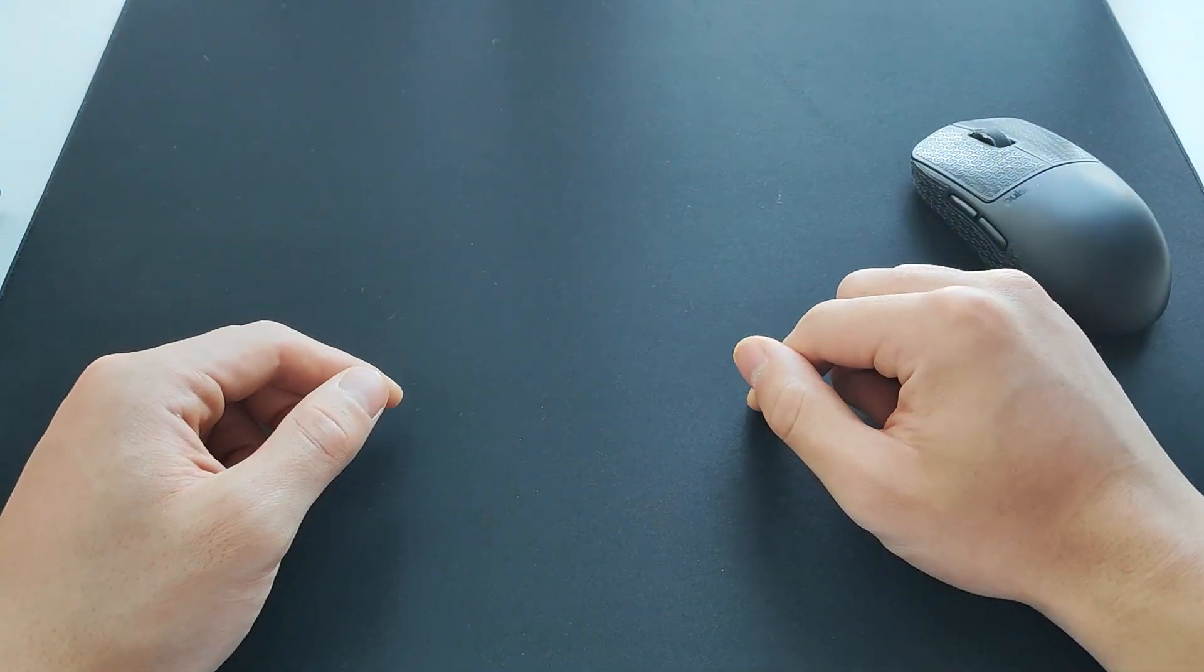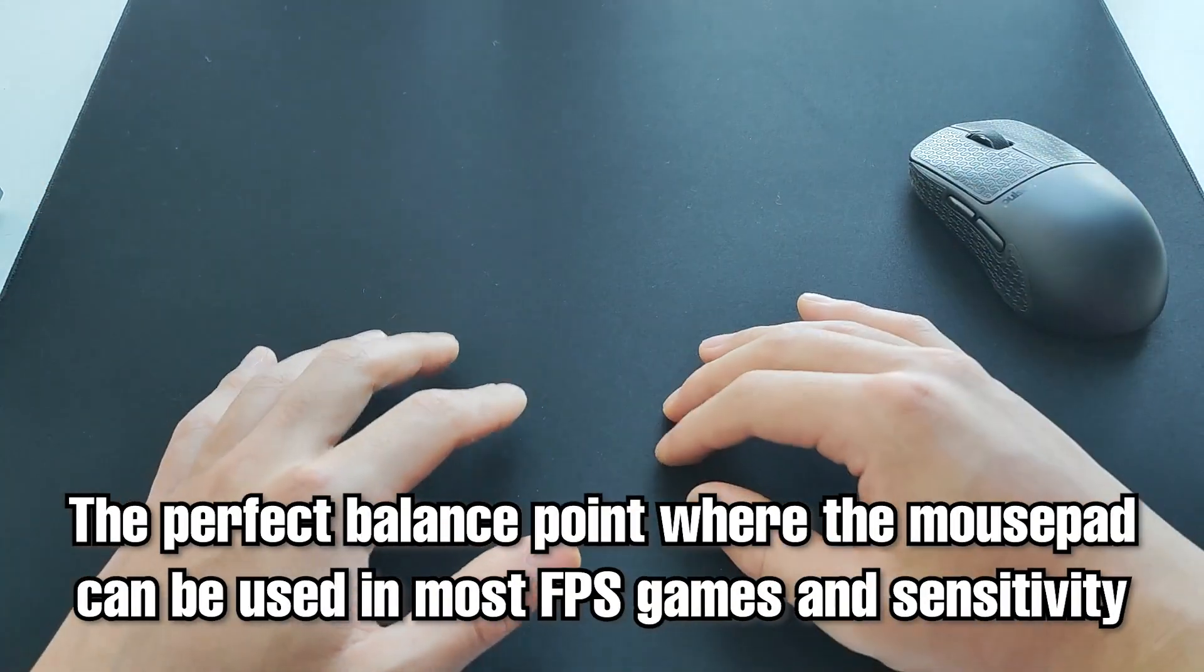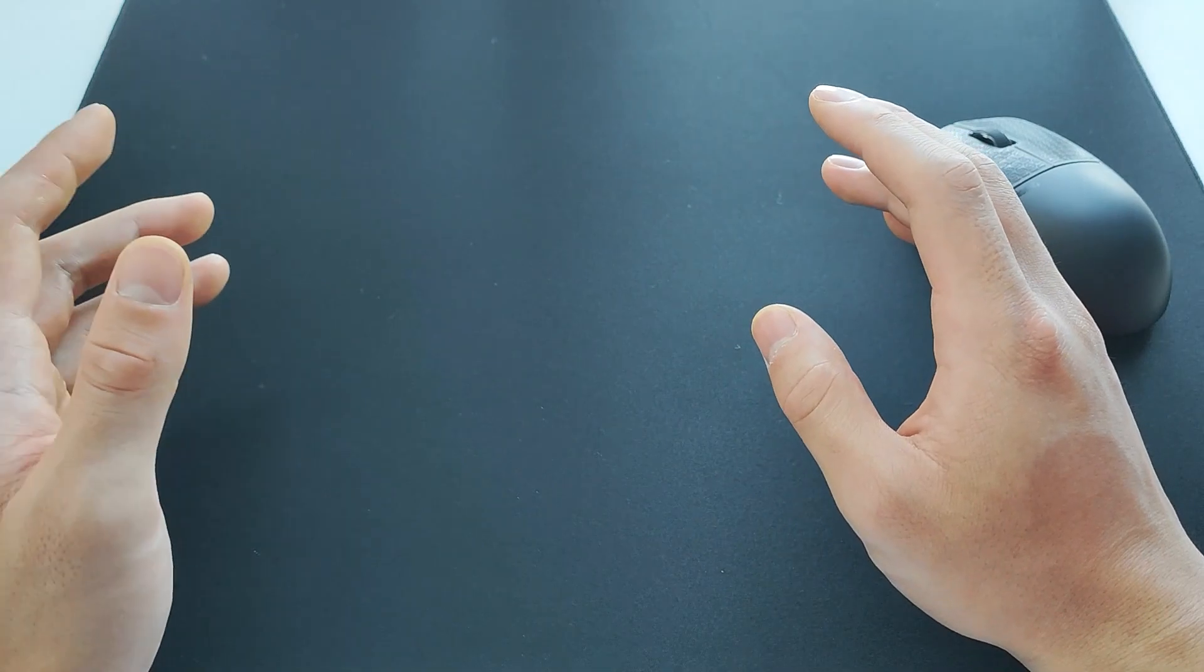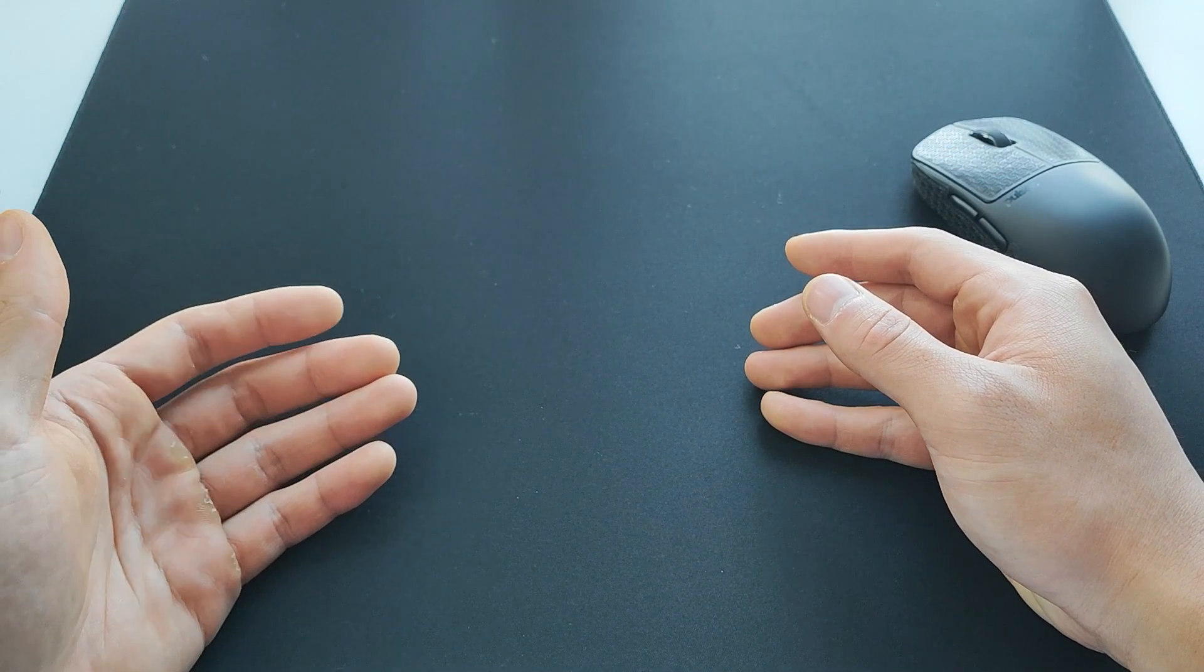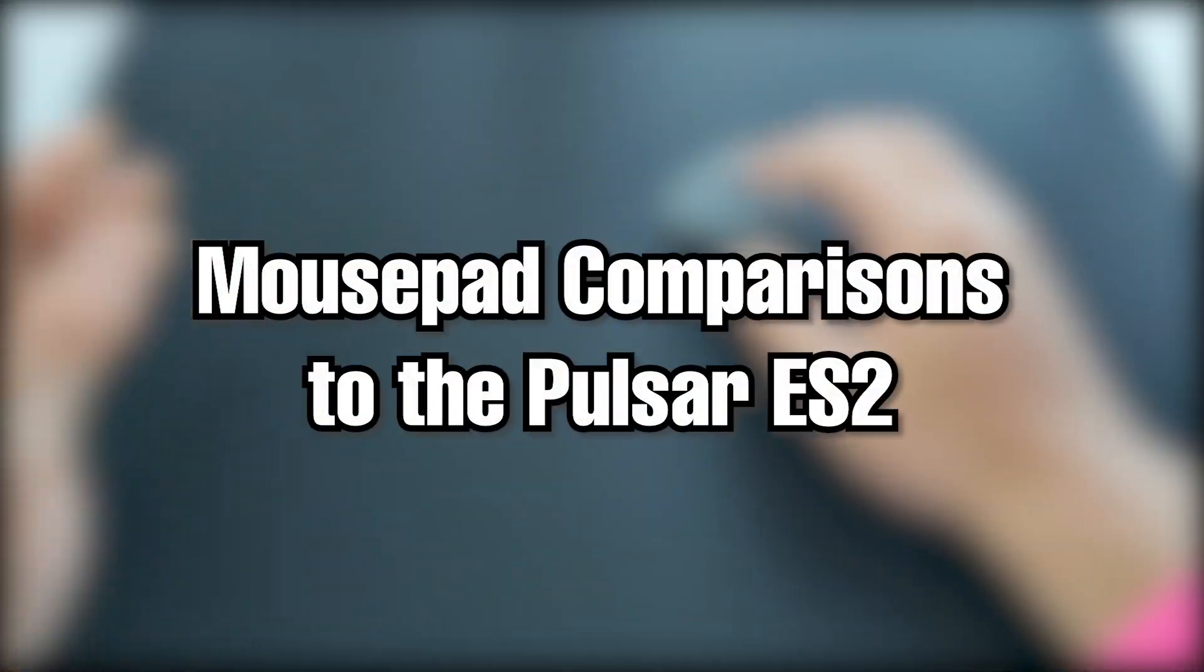Regarding speed and control, the ES2 is definitely a medium speed pad in the grand scheme of things. This is the perfect balance point where I think every game and every sense should be able to use this pad. You may prefer a certain faster or slower glide, but this is at a level where it's just impossible to hate. Now I'd consider this a little bit faster than the Artisan Zero, but we're talking roughly around there.